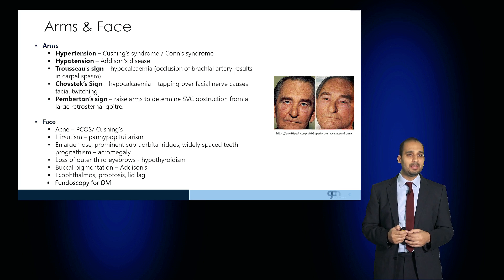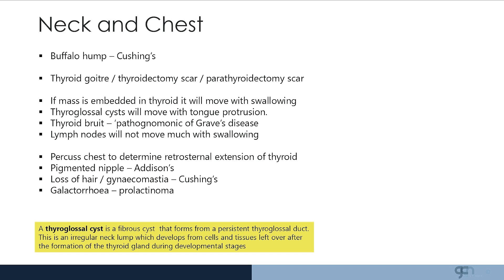Move on to examine the neck and the chest. Observe the neck, particularly the posterior aspect, for what's known as a buffalo hump appearance — the deposition of additional subcutaneous fat here is suggestive of Cushing's disease. Observe the anterior neck for a thyroid goiter or a scar. These collar incisions of the thyroid gland are subtle scars and can be a consequence of a previous thyroidectomy due to hyperthyroidism, a thyroid tumour, or hyperparathyroidism.